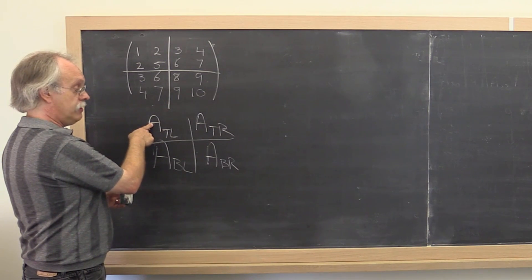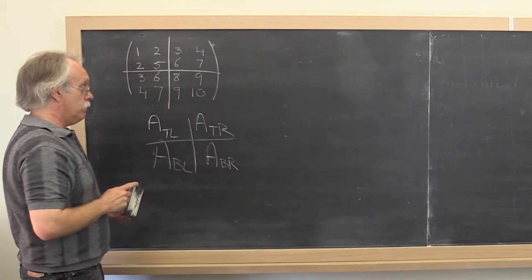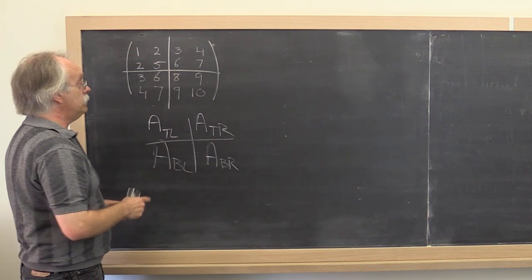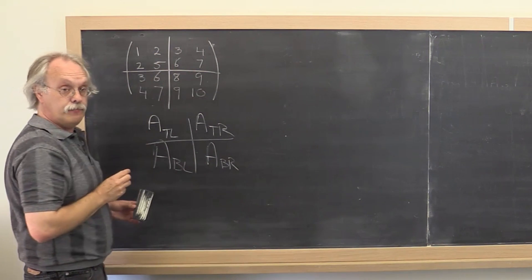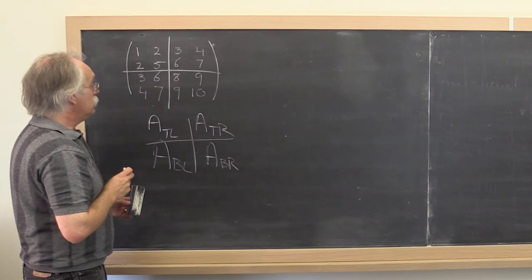So A top left is inherently symmetric as is A bottom right if these are square matrices, which is what we're always going to make sure they are.